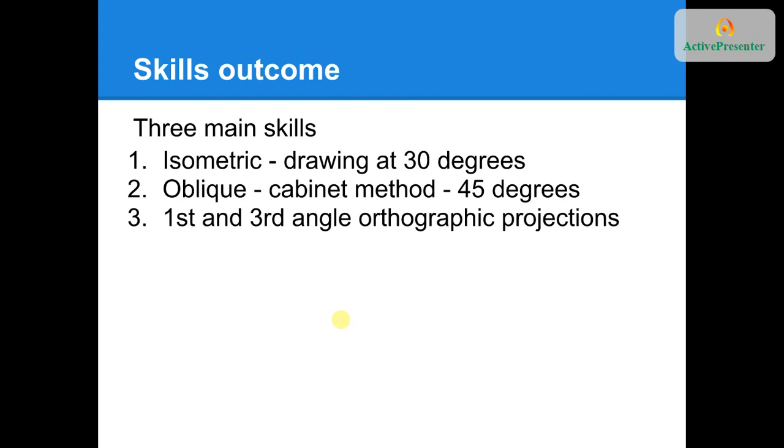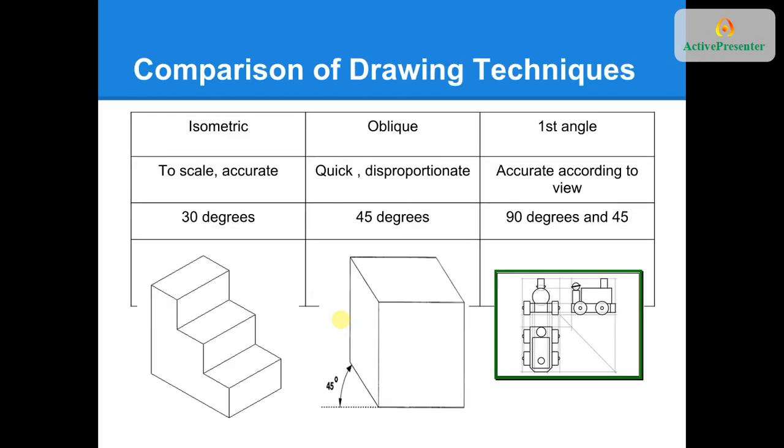I've tried to get a short summary table so you can see what the different ones look like in terms of their comparison. Our isometric is accurate, to scale, drawn one to one, and always using 30 degrees. When drawing isometrics, you should always only be doing 30 or 90 degrees. There should be no other angles you would be using when drawing isometrics.